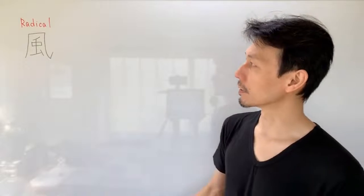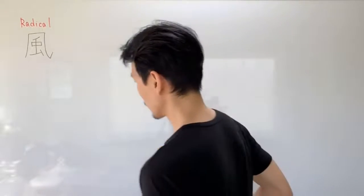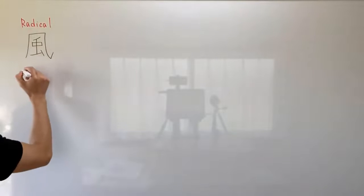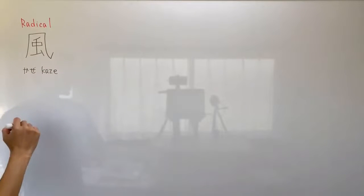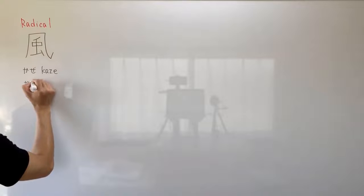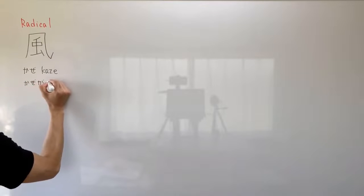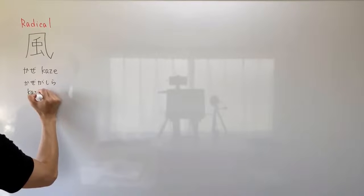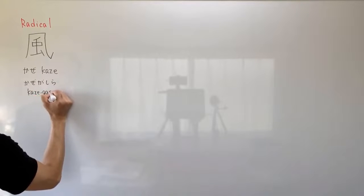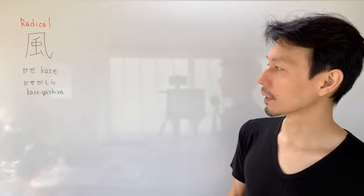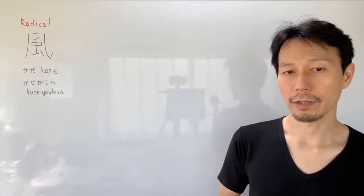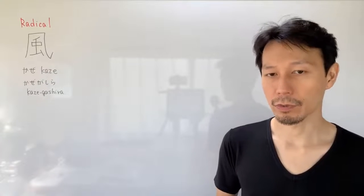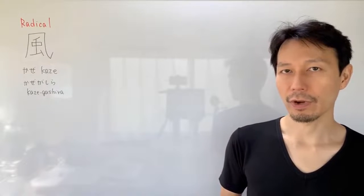First, the readings of this radical are: Kaze, and also Kazeigashira. This radical has various wind-related names and characters that describe wind.